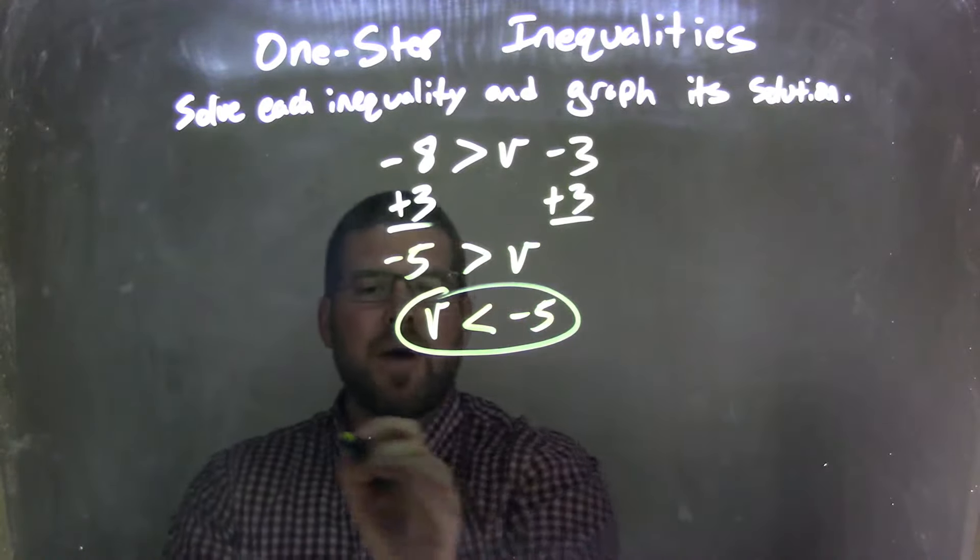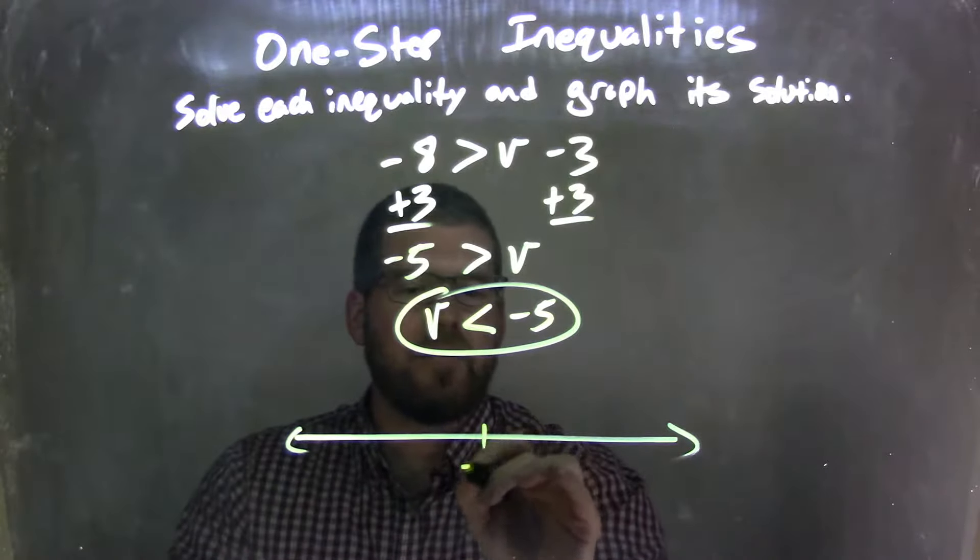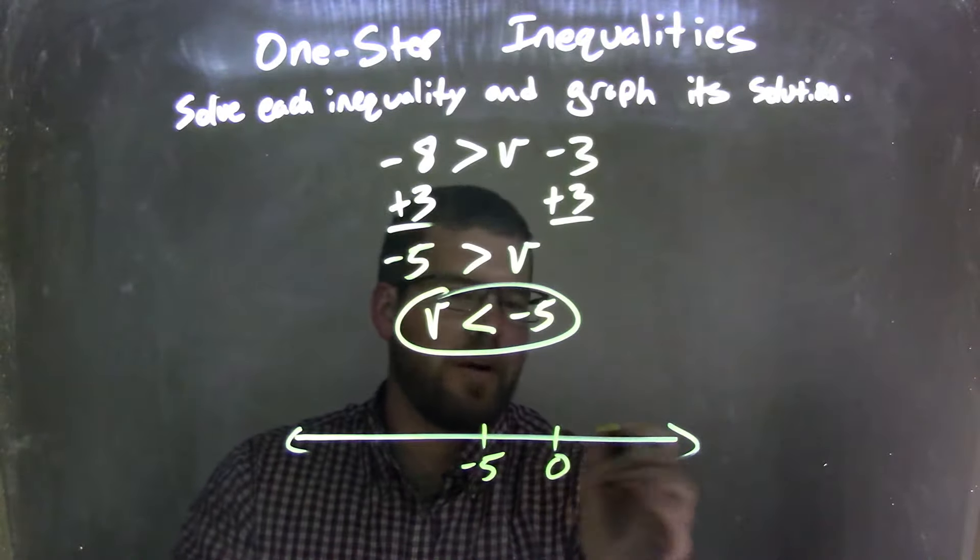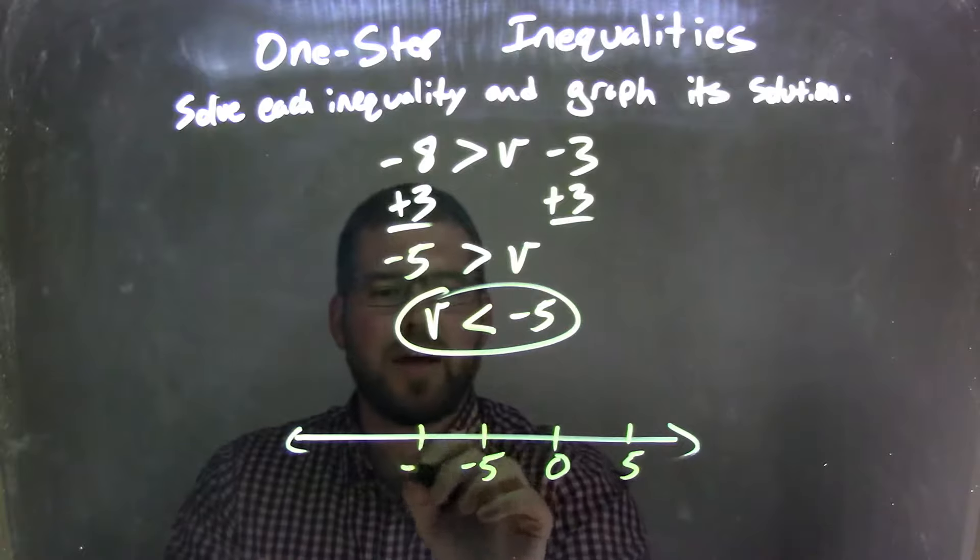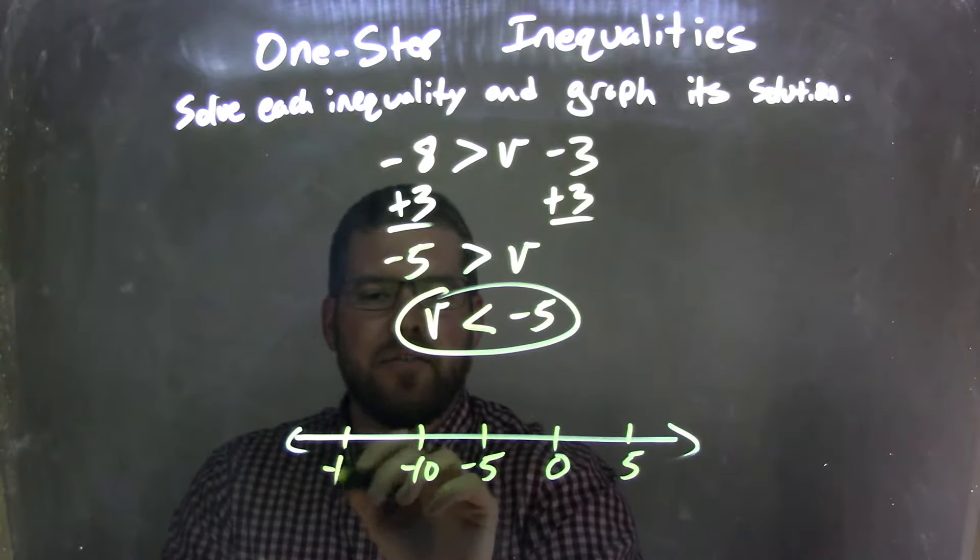And so now I need to graph that. So we have, let's go negative 5 here, we have 0, let's go by 5, 5. We have negative 10 and negative 15.